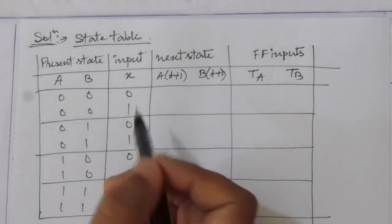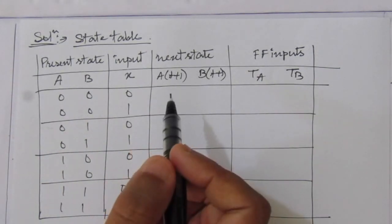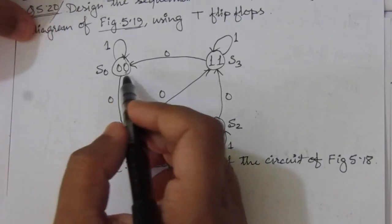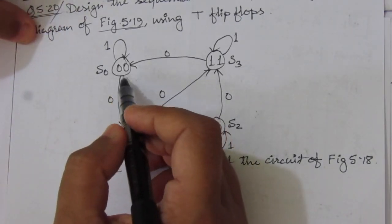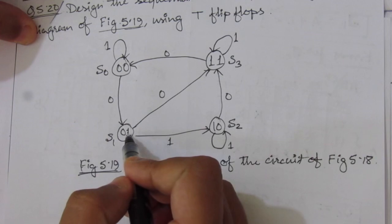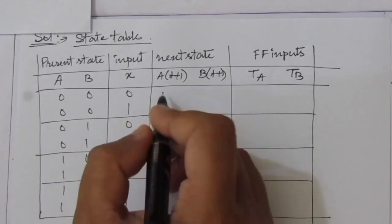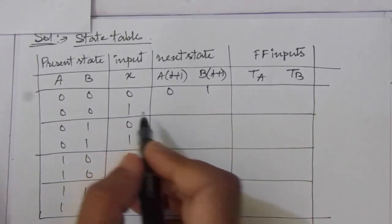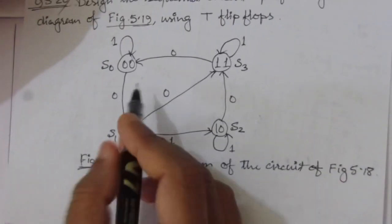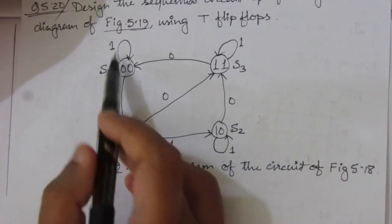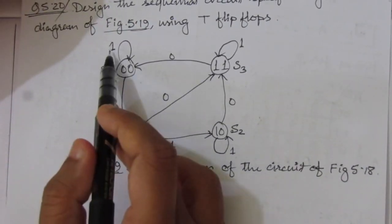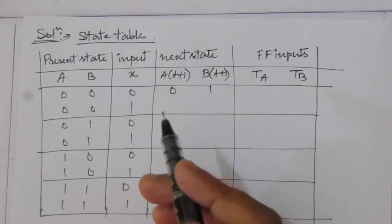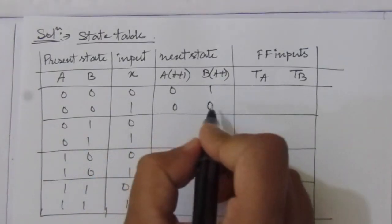Now we'll find out the next states from the state diagram. From state 00, when the input is 0, it goes to state 01. When the input is 1, from state 00 there is a transition to 00 itself — that means it remains in the same state.